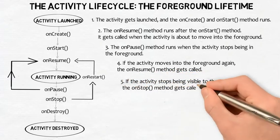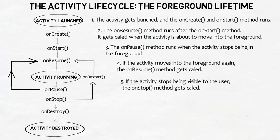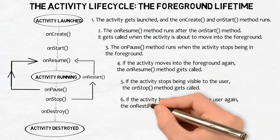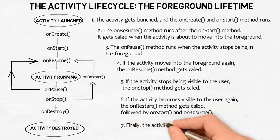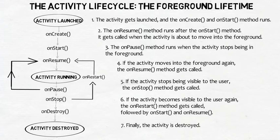If the activity stops being visible to the user, the onStop method gets called; after it runs, the activity is no longer visible. If the activity becomes visible to the user again, the onRestart method gets called, followed by onStart and onResume. The activity may go through this cycle many times. Finally, the activity is destroyed — as it moves from running to destroyed, the onPause method gets called before destruction, and the onStop method usually gets called too.